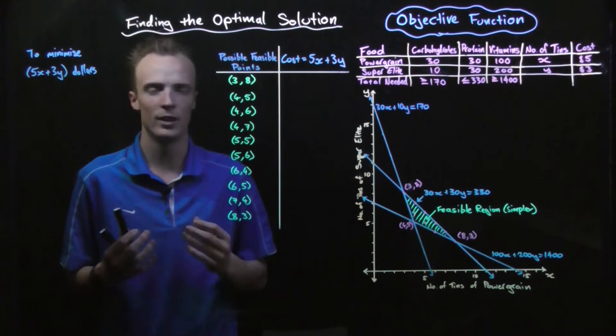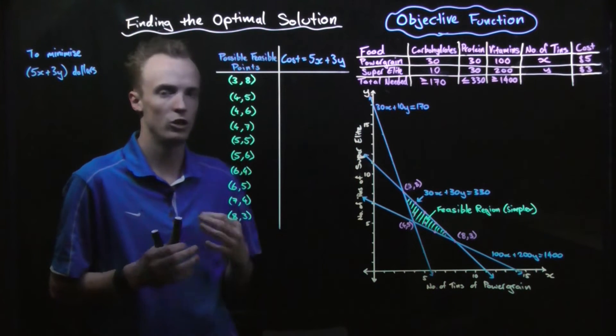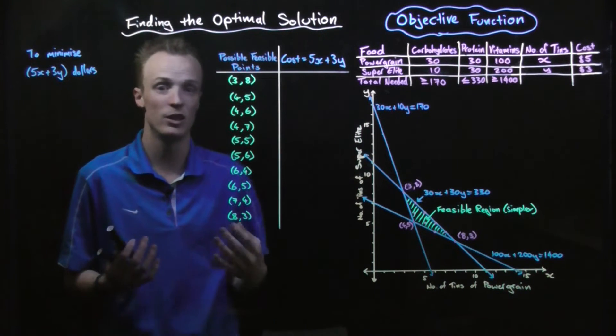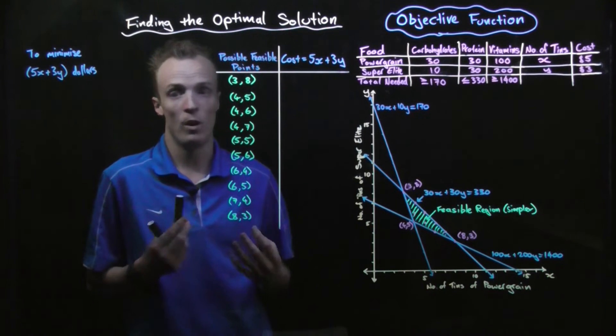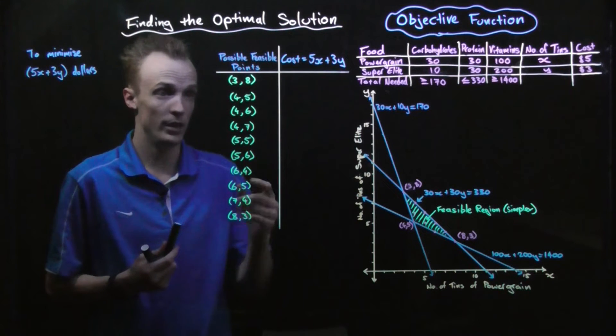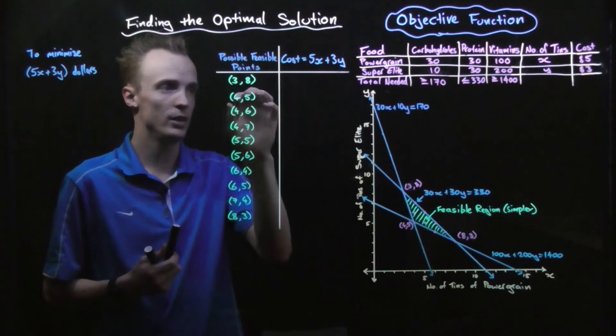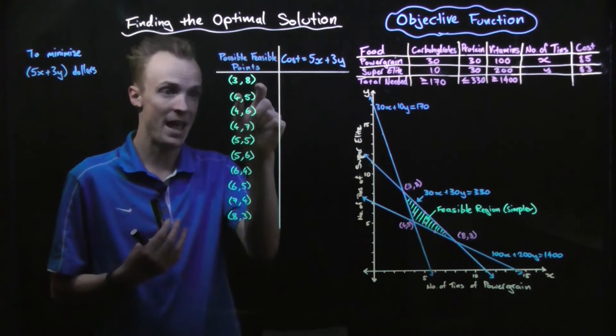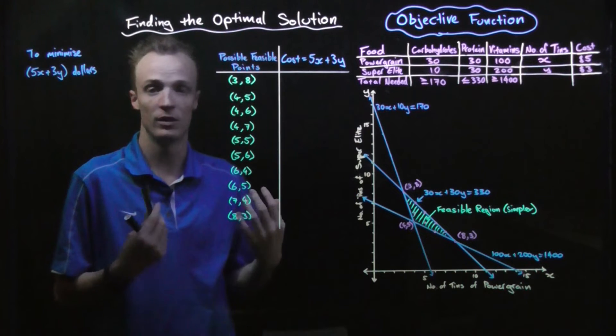Now that we've got our objective function, the next step is to use our objective function to work out which one of these combinations is the cheapest. One way that we could do that is to literally substitute every single combination into our objective function and work out how much each of these combinations cost.